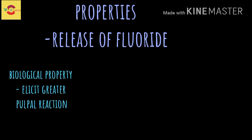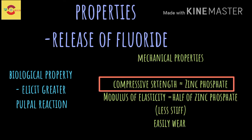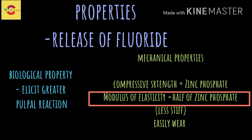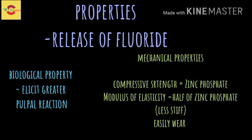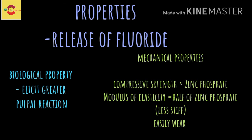The most important property of GIC is the release of fluoride. GIC can elicit a greater pulpal reaction than zinc oxide eugenol cement. Considering the mechanical properties, the compressive strength is similar to that of zinc phosphate cement, but the modulus of elasticity is only about half that of zinc phosphate cement. Thus GIC is less stiff and more susceptible to elastic deformation. GIC restorations are also more vulnerable to wear and less tough compared to other recently developed materials.